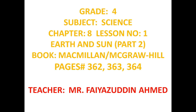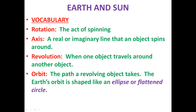A brief review of the vocabulary we discussed in the last session: Rotation — the act of spinning. In this lesson we are going to study about the earth's rotation. Axis — a real or imaginary line that an object spins around; we deal with the earth's axis here, which is tilted. Revolution — when one object travels around another object. We are going to study about the earth's revolution around the Sun. Orbit — the path a revolving object takes; the earth's orbit is shaped like an ellipse, or flattened circle.